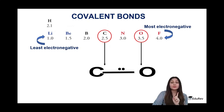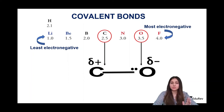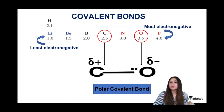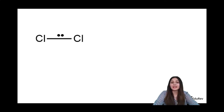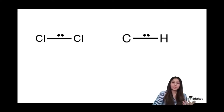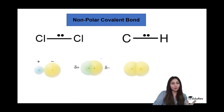In a covalent bond between carbon and oxygen, the shared pair should lie exactly in between, but due to the higher electronegativity of oxygen, it shifts more toward oxygen. This creates polarity — delta positive on carbon and delta negative on oxygen. This is called a polar covalent bond. In contrast, a Cl-Cl bond or C-H bond, where the electronegativity difference is negligible, has the shared pair exactly in between — that is a non-polar covalent bond.